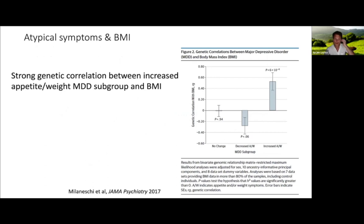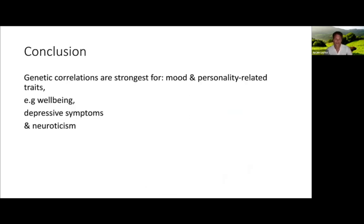Atypical symptoms — increased appetite and increased weight — are seen in about 10 to 20% of major depressive episodes. Looking at genetic correlations with BMI, this subtype of MDD with atypical symptoms is strongly genetically correlated with BMI, whereas other subtypes of MDD such as decreased appetite are not associated with BMI. In conclusion, genetic correlations for MDD are strongest for mood and personality-related traits — subjective well-being, depressive symptoms, and neuroticism.